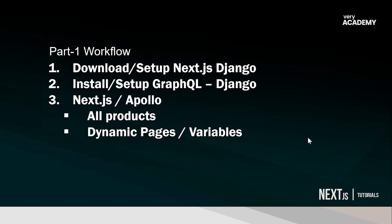Just before we get started, the workflow: we're going to download and set up Next.js and Django that we've already pre-created in the previous tutorial. Then we're going to install and set up GraphQL on Django so we can make the data available to the front end. Next, we go into Next.js and install Apollo — that gives us the interface to communicate with our GraphQL Django backend. We'll then go through each Next.js page and convert from Django REST framework to GraphQL, collecting product data and handling dynamic pages with variables in our queries.